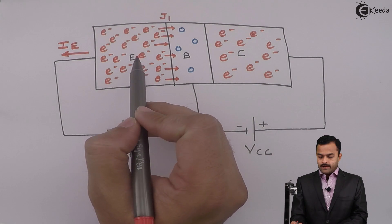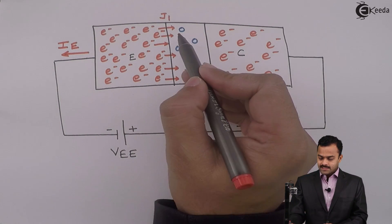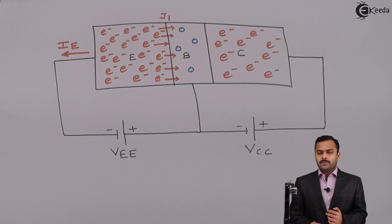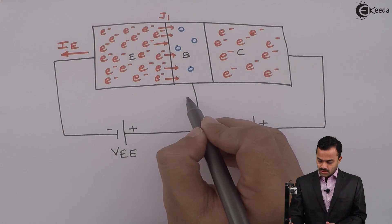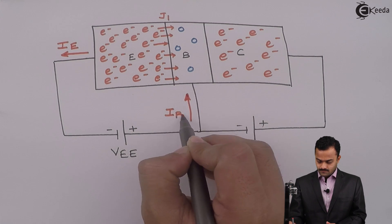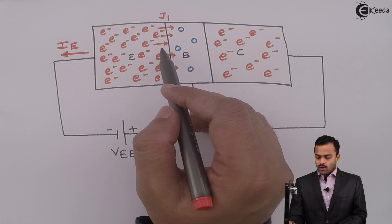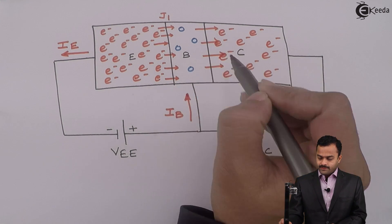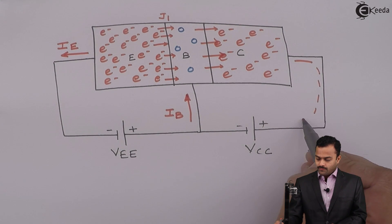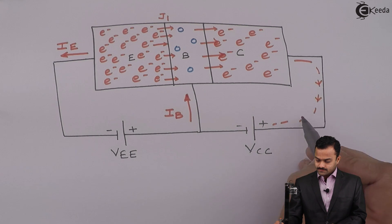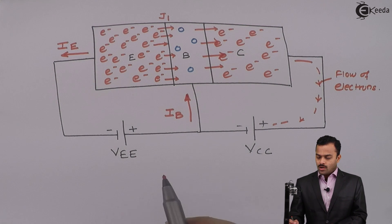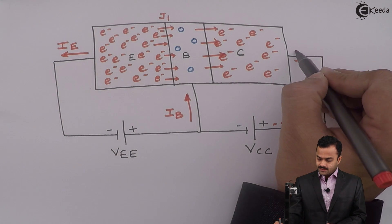Some electrons from the emitter region will recombine with the holes present in the base. Since the base has very few holes, very few recombinations are possible, constituting a small base current. The remaining electrons will cross the collector-base junction and flow into the collector region, then to the positive terminal of VCC, constituting the collector current.